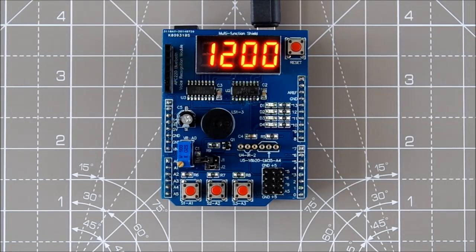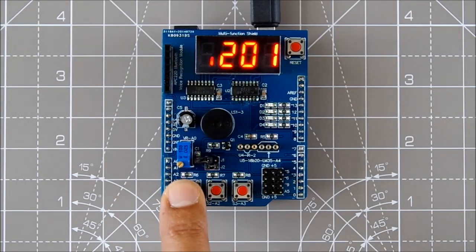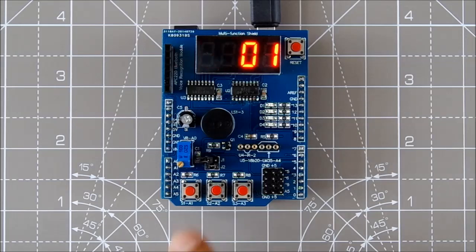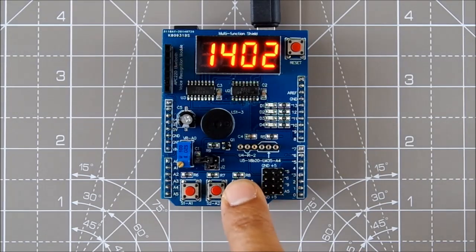To set the time, we hold down button one and set the hour. Let's just say it's going to be 10 past 2.